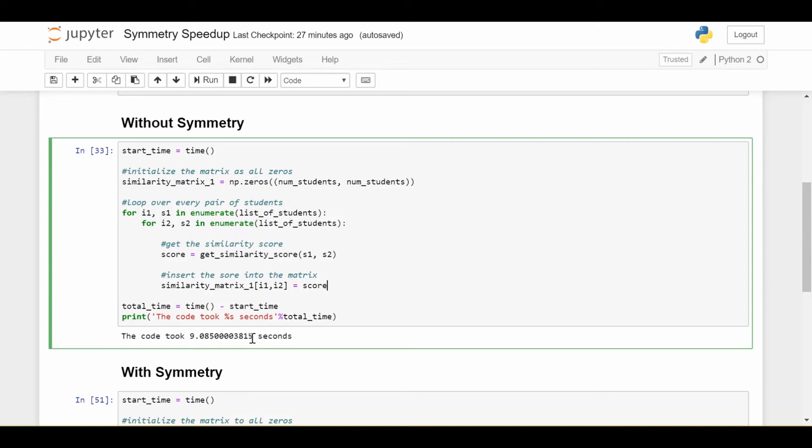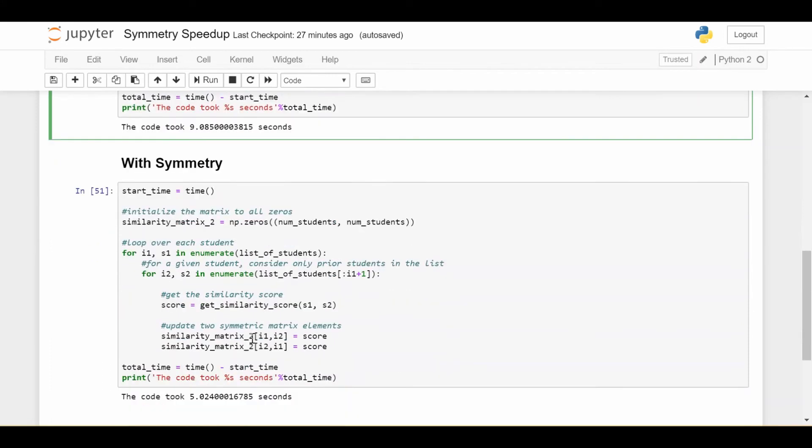So notice that we're not taking advantage of symmetry here. We know that student 100 and 200 will have the same similarity score as student 200 and 100. But we go ahead and compute that score twice anyway. So let's see if we do take symmetry into account, how can we make this a little bit more efficient?